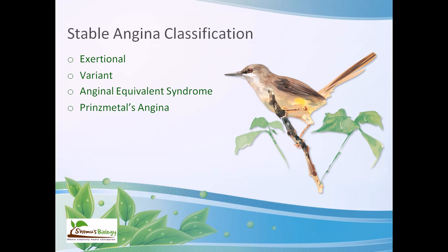Prinzmetal angina is completely due to spasm, not very common, and transmural ischemia is its typical characteristic. Elevation of chest pain occurs with exercise. Syndrome X is another type — typical exertional angina with a positive exercise stress test but with anatomically normal coronary arteries. The problem reduces the capacity of vasodilatation in the microvasculature.